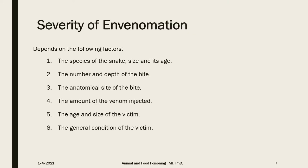The severity of envenomation depends on several factors. First is the species of the snake involved, its age and size. Second is the number and depth of bites and the total quantity of venom injected. The anatomical site of the bite is also significant — venomous snake bites on the head are two to three times more serious than those on the extremities and trunk. Bites on the upper extremities carry a worse prognosis than those on the lower extremities.